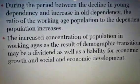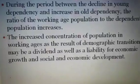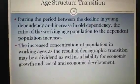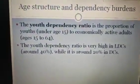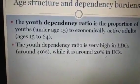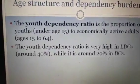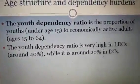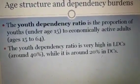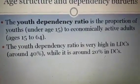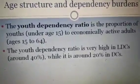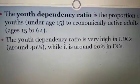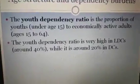Our prime minister says this age structure is a dividend or burden for economic growth and social development. The youth dependency ratio is the proportion of youths under age 15 to economically active adults aged 15 to 64 — the age of working population, which applies in India and is the global average. The youth dependency ratio is very high in least developed countries, around 40%, while it is around 20% in developed nations. So youth dependency ratio is very high in LDCs and very low in developed countries.